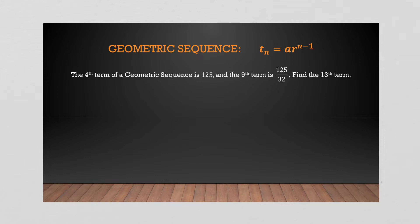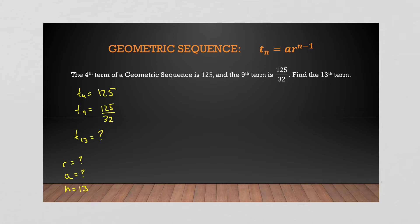Similar to arithmetic sequences where we found a term given two other terms using common differences, we do something analogous here. We have t₄ = 125 and t₉ = 125/32, and we want t₁₃. To find t₁₃ we'll need a, we know n will be 13, and we need r.